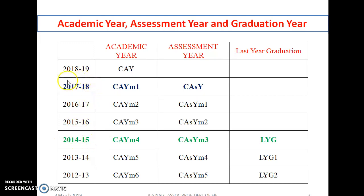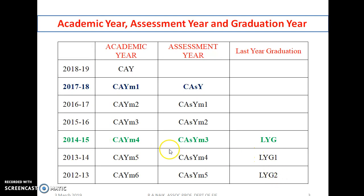For example, the 2014 batch joined and after four years — in 17-18 — they passed out. So this batch comes under the latest year graduation. The NBA will focus on the assessment year and the last three graduation levels. This is very important.